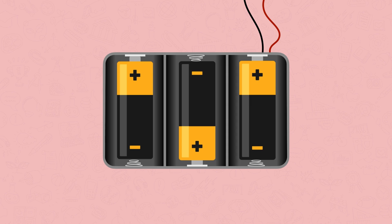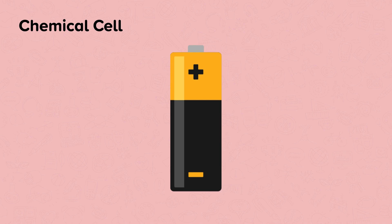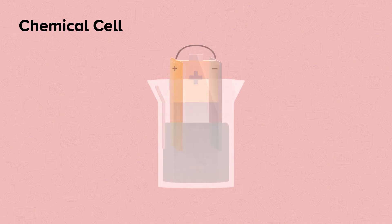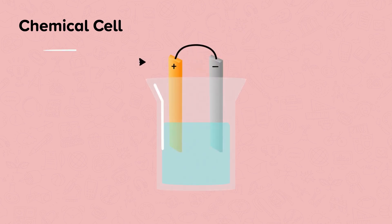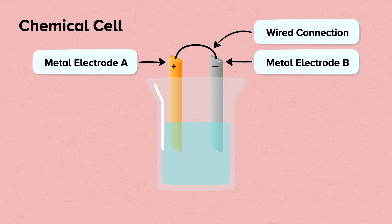This cell can be represented using a simple chemical cell. This is a simple chemical cell and it can be made in a school laboratory. It's made by connecting two different metal electrodes with a wire. The metal electrodes need to be placed in contact with an electrolyte.